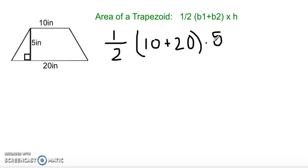First, the order of operations tells us we must simplify within the parentheses. So, the first thing we must do is 10 plus 20, and we know that 10 plus 20 is 30. So, that gives us one half times 30 times 5.